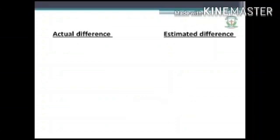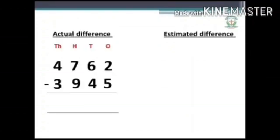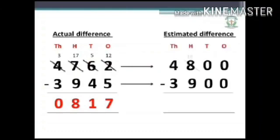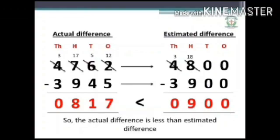Let us find the actual difference and estimated difference by writing in the place value chart. The actual difference of 4762 minus 3945 is equal to 817. The estimated difference of 4800 minus 3900 is equal to 900. Here 817 is less than 900, so the actual difference is less than the estimated difference.